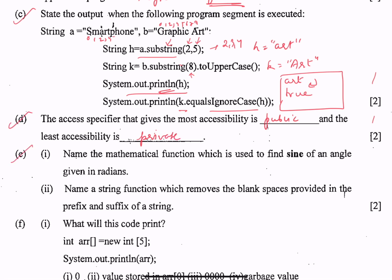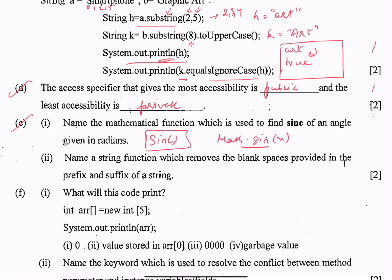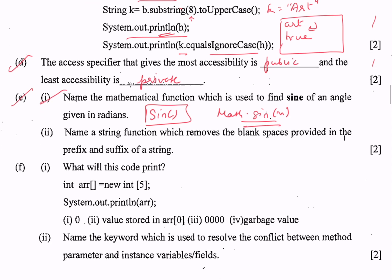Part e1: name the mathematical function used to find the sine of an angle given in radians — it is Math.sin(), passing some value. Part e2: name the string function which removes the blanks provided in the prefix and suffix of the string — this is the trim() method of the String class.